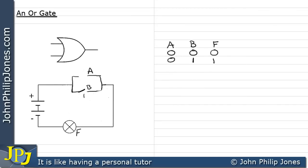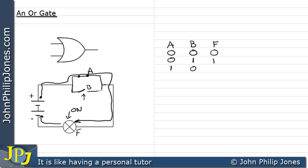Now we've opened switch B and we're going to close switch A, so A is 1 and B is 0. Considering the current leaving the battery, it will flow around the circuit through switch A, continue through the lamp, and back to the battery. The lamp will now come on, and consequently F will be a 1.